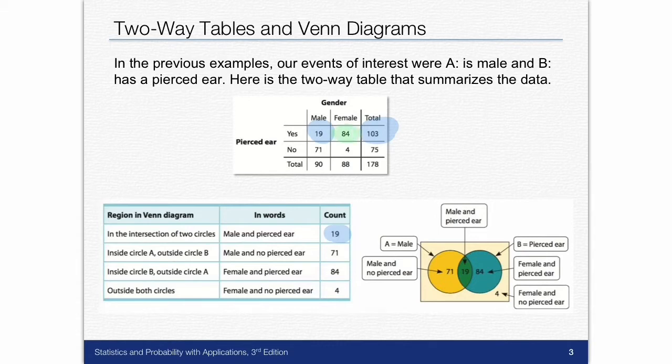But we already knew the 84 right here in the table. If you don't have the table, you can still figure these numbers out. That's what I'm getting at. So there's where the 84 came from. There's where the 71 came from.